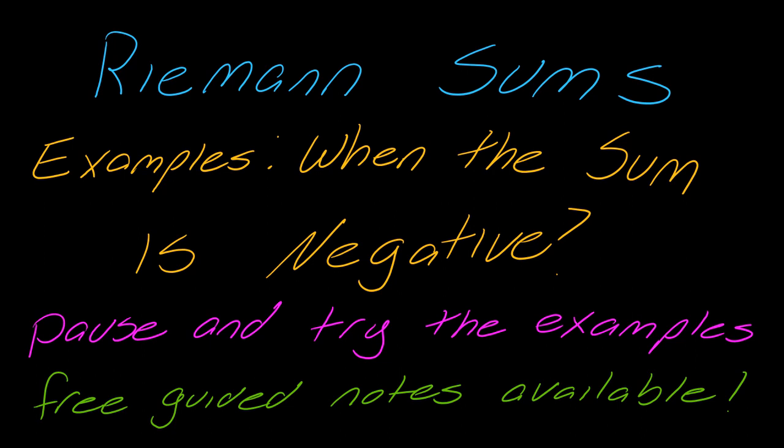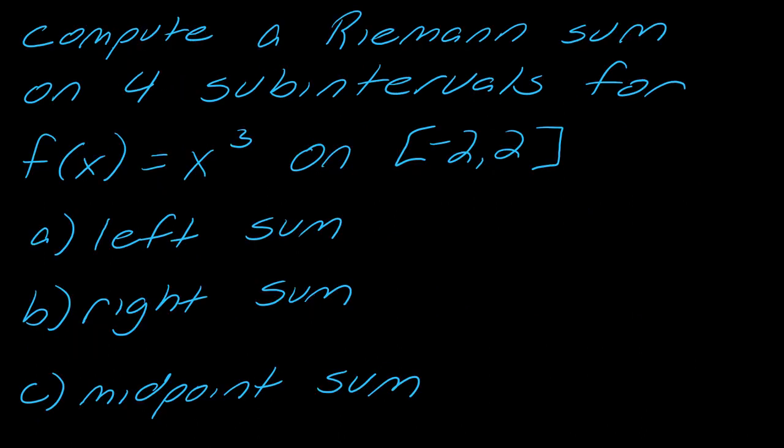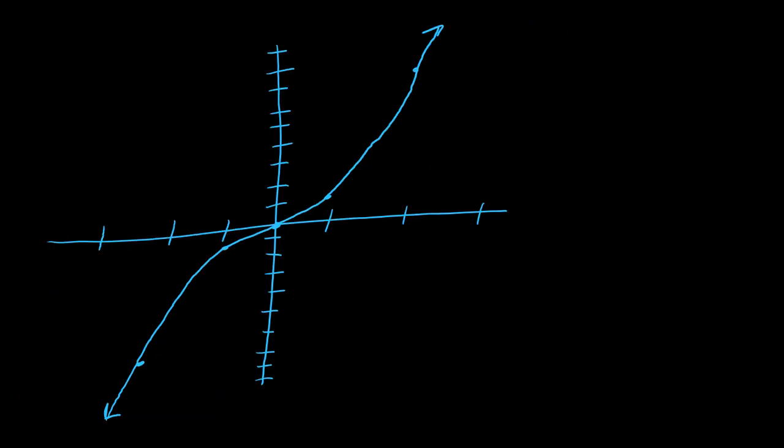So there's going to be two parts to this. First, we're just going to compute the sum, and then we're going to talk a little bit about what it means. So here's the Riemann sum that we're going to do. I'm going to compute this Riemann sum on four subintervals for f(x) = x³ from negative two to two, and we're going to do the left sum, the right sum, and then the midpoint sum.